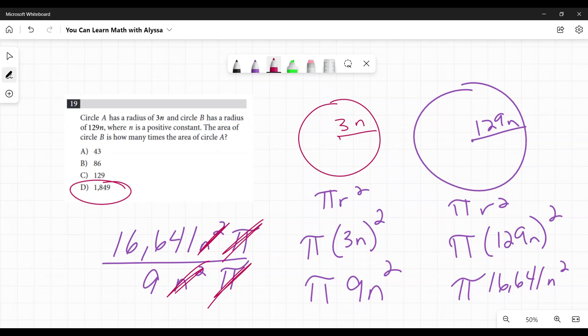The shortcut way to do this is to look at the 3 and the 129, and to realize that those n's are kind of irrelevant, because they're going to become n squareds in both of them and they're going to cancel out. And you go, how many times bigger is 129 than 3?